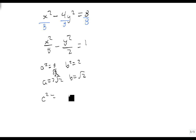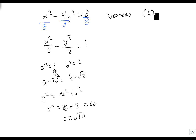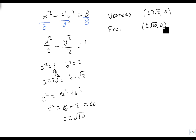Now c squared is a squared plus b squared, so c squared is 8 plus 2, which is 10, so c is the square root of 10 — a little bit more than 3. Since x is the positive variable, I take a for the x-direction. It's not always the bigger value; it's the one underneath the positive variable. So my vertices are at (±2√2, 0) and my foci are at (±√10, 0). And I've correctly found my vertices and my foci.